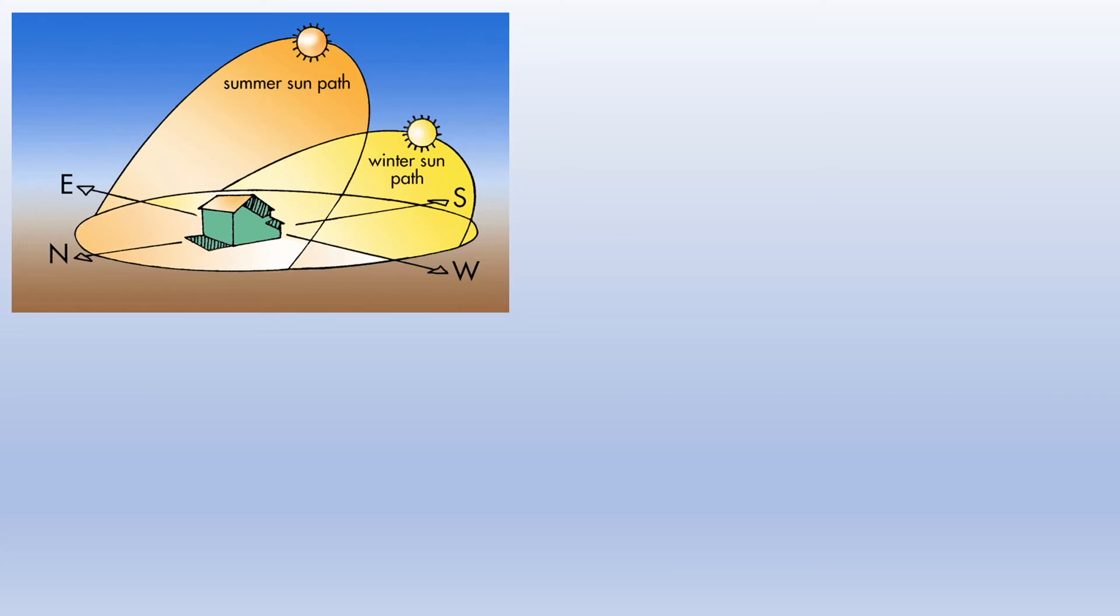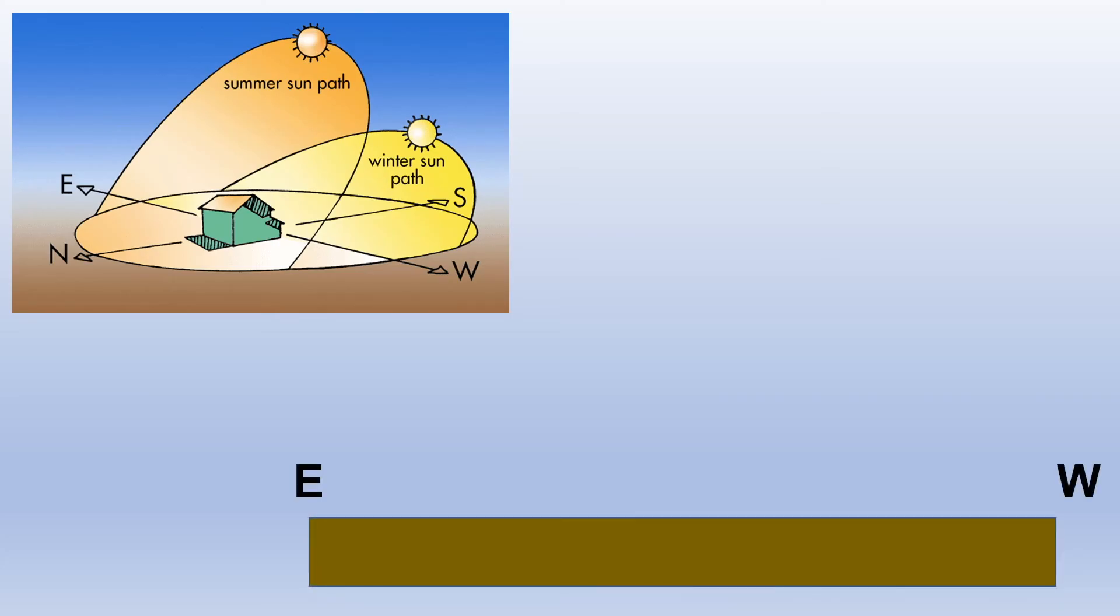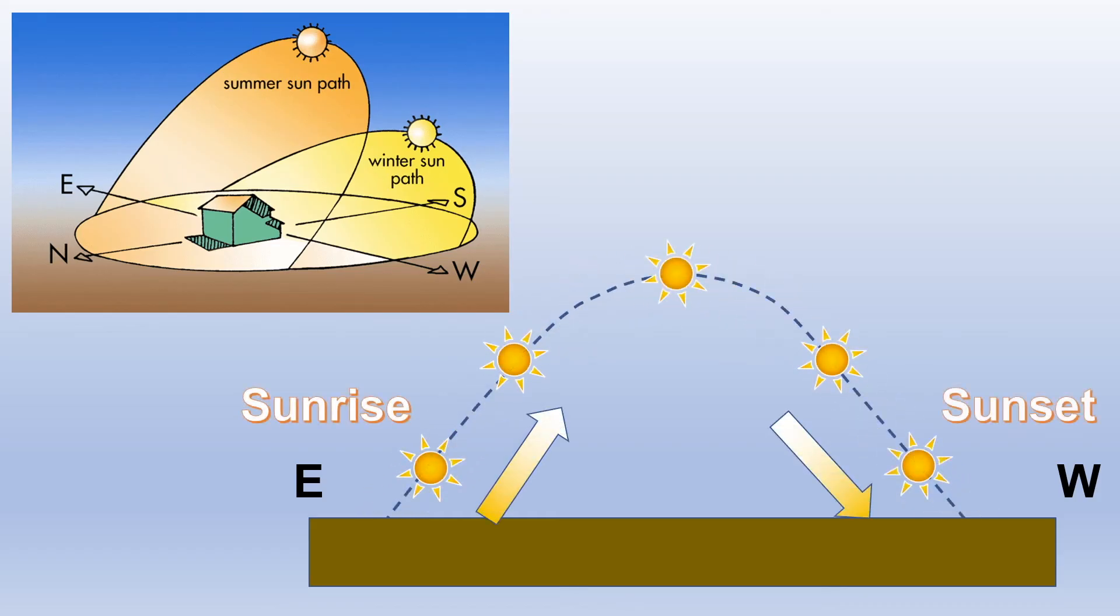The path of the sun as seen from the ground is therefore like this. During sunrise, the sun will rise to the right, and during sunset, the sun will sink to the right.